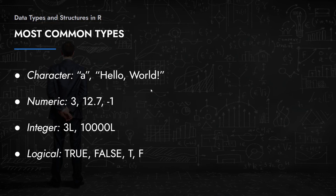Following the character data type, we have what is called a numeric. A numeric is essentially any number with double precision, or any type of decimal number. These have a lot of corresponding data types in other programming languages, but in R any number that is not an integer can be referenced using a numeric data type.